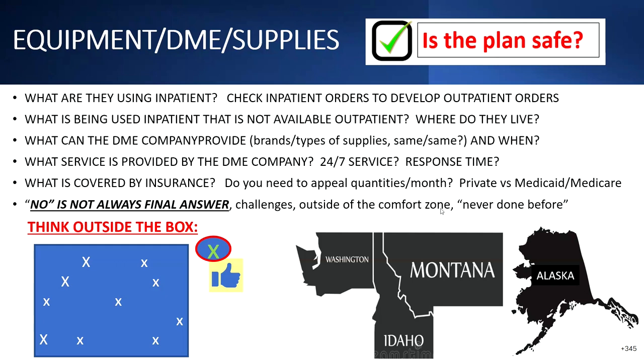What's covered by insurance? Sometimes the quantities per month that insurance provides isn't enough. We see that with suction catheters and have to appeal to get them what they need. Also worth reminding some DME companies that private insurance will give you more than Medicaid — sometimes they fall back to what Medicaid or Medicare gives. We've got to remind them that the child has private insurance and should be able to get more. That's a good thing to check.